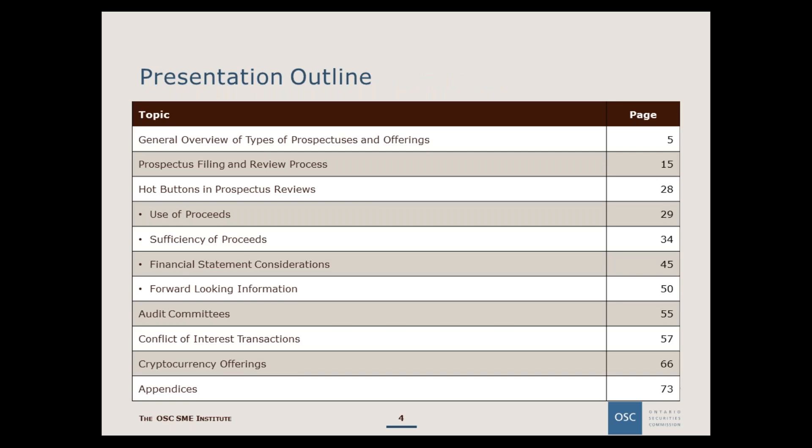We have a number of topics to cover today. We will share our observations on the types of prospectuses and the standards of review, touch on various issues including sufficiency of proceeds and financial condition, primary business and recent probable acquisitions, required financial information and history in a prospectus, and considerations when completing transactions involving related parties. We will also discuss issues related to cryptocurrency offerings. We have reserved time for questions at the end, which you can submit at any time using the chat function, though we will be responding to all questions at the end.